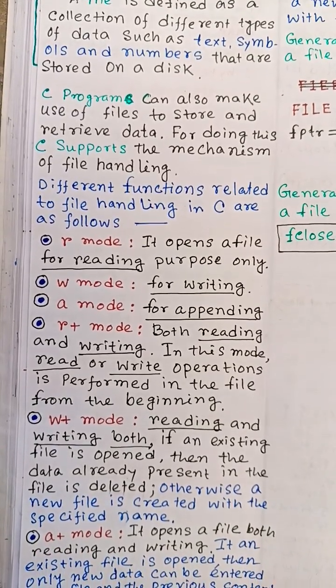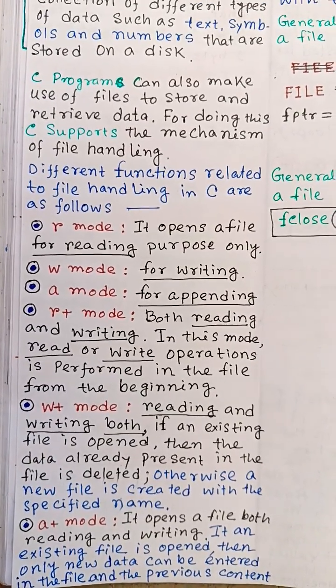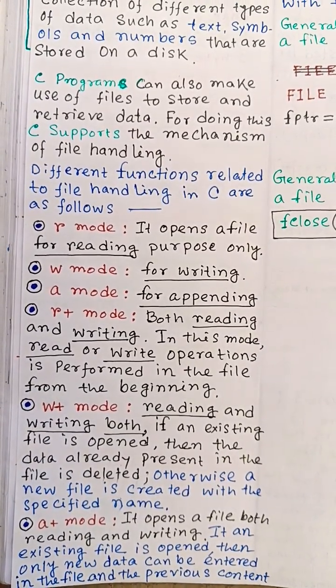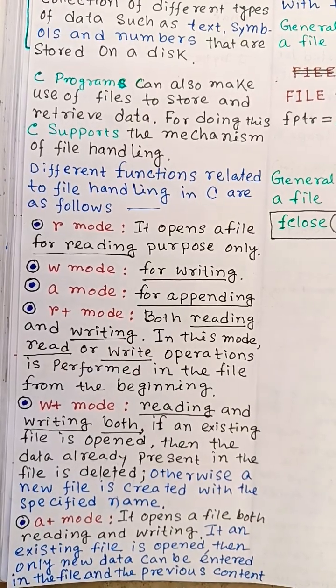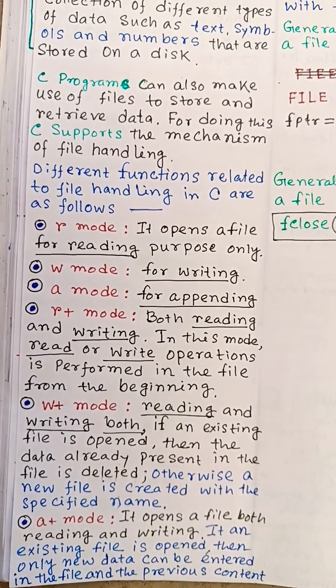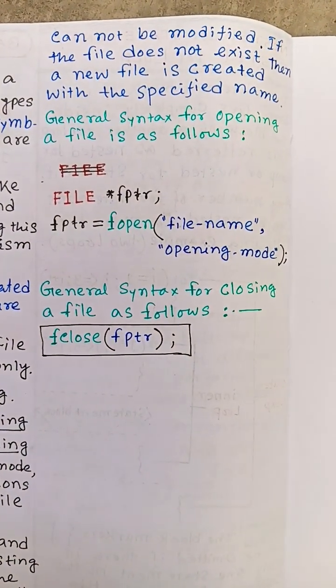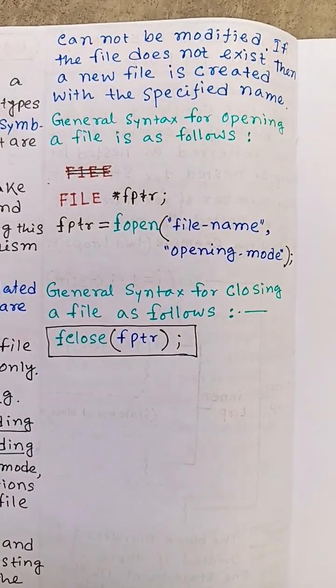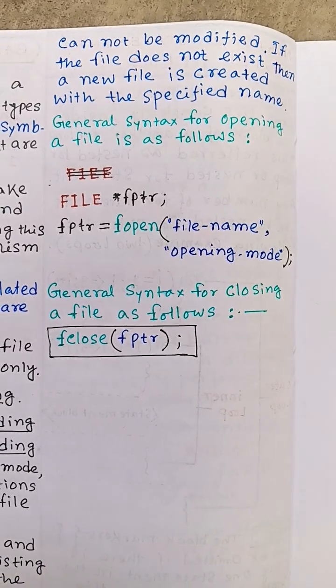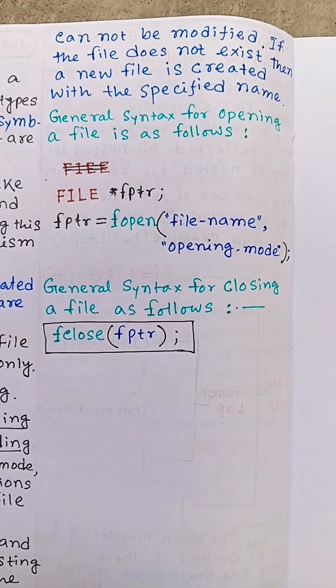A plus mode opens a file for both operations, reading and writing. If an existing file is opened, then only new data can be entered and the previous content cannot be modified. If the file does not exist, then a new file is created with the specified name. General syntax for opening a file is as follows.